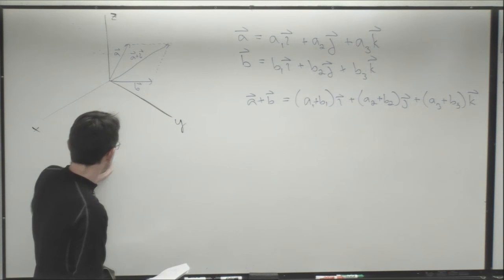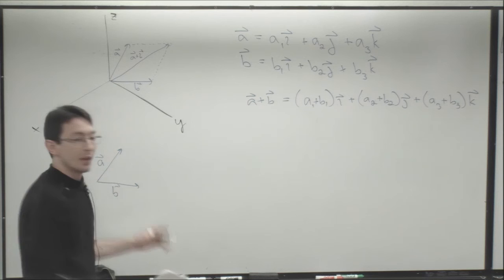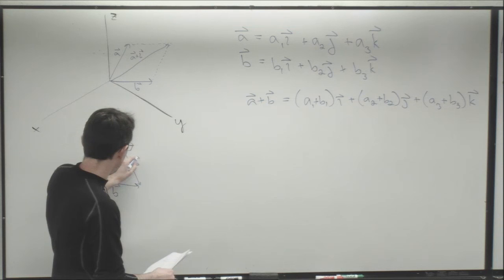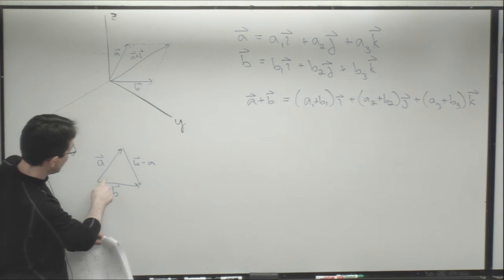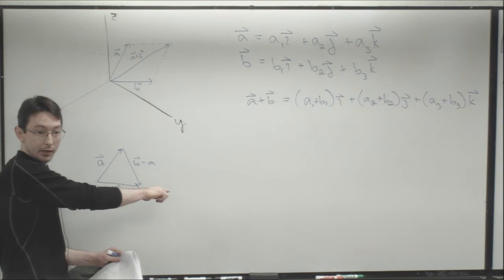If I subtract these vectors — looking at a and b — subtracting gives the vector that would take me from one point to the other. So b minus a is the vector pointing from a to b. We can verify this because if I add a to (b minus a), I should end up with b — and indeed a plus (b minus a) equals b.